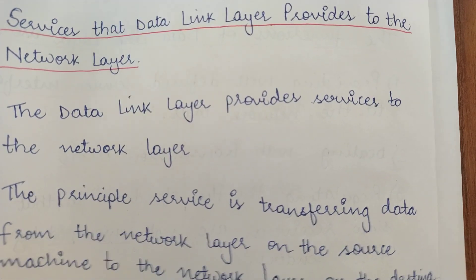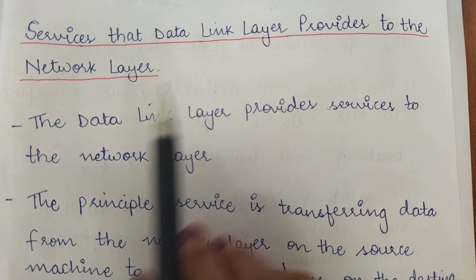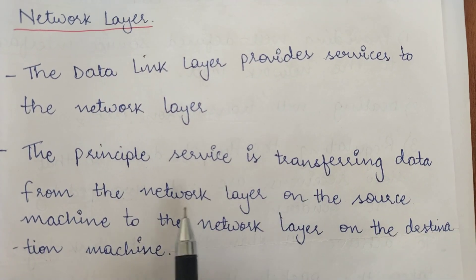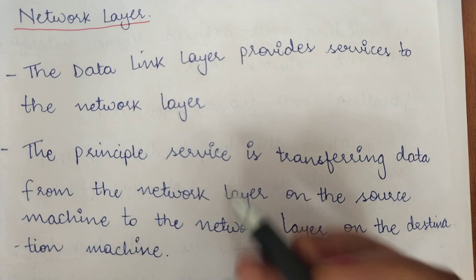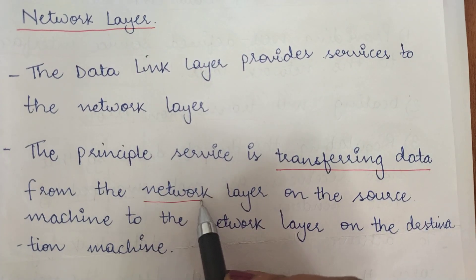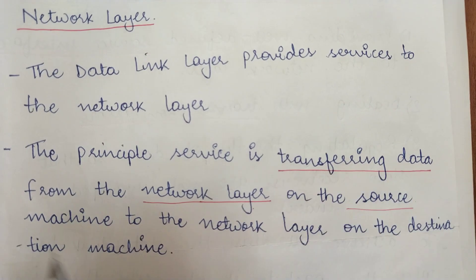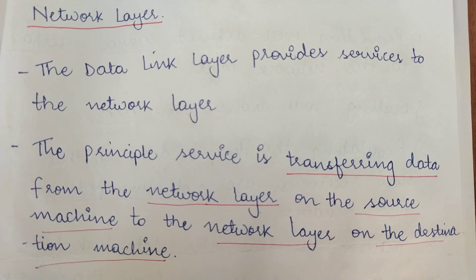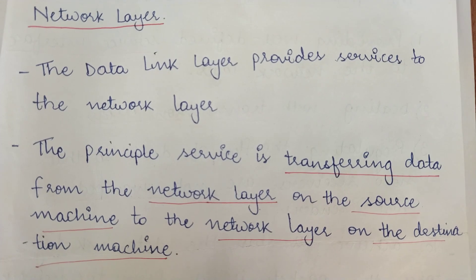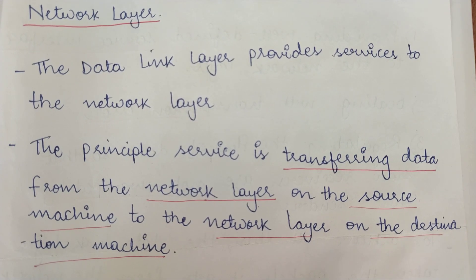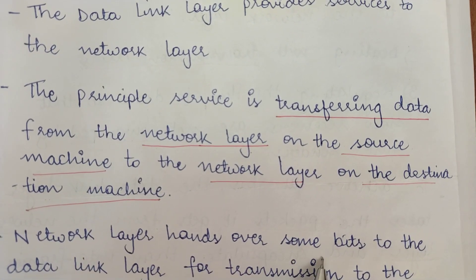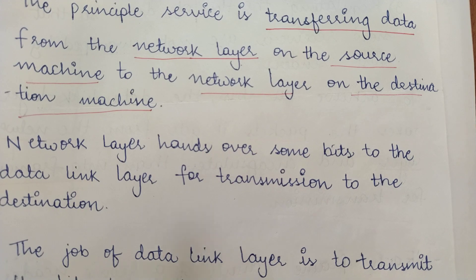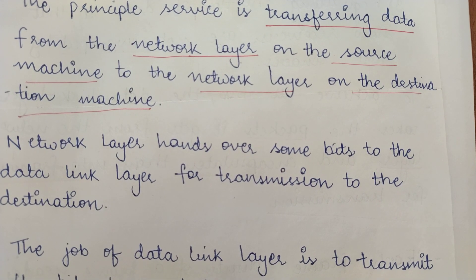What are the services that the data link layer provides to the network layer? The service is transferring data from the network layer on the source machine to the network layer on the destination machine. We usually visualize it as the network layer on the source machine transmitting data directly to the network layer on the destination machine. Then the network layer hands over some bits to the data link layer for transmission to the destination. The job of the data link layer is to transmit those bits to the destination machine so they can be handed over to the network layer.